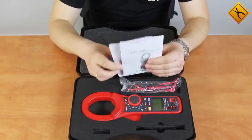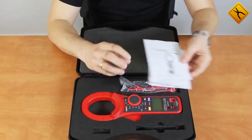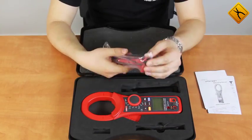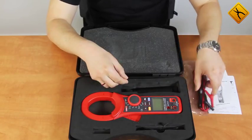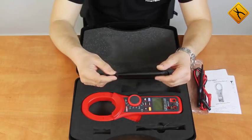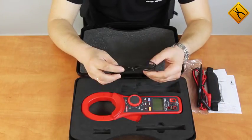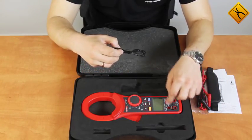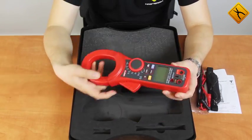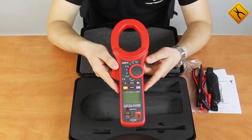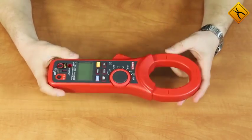The package includes a user manual, measuring probes, a hand strap, a special signal cable for the analog output, and the meter itself. The clamp meter is rather heavy and large.